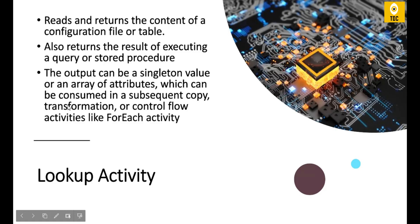The Lookup activity is basically used for reading and returning the content of a configuration file or table. Why do we use a configuration file or table? This is used specifically to do automation. Suppose you want to read 100 files — file 1, file 2, file 3 — which are those 100 files? You store those in the configuration table or configuration file. Or you want to read 10 tables out of 100 source tables — what are those 10 tables? You store them in the configuration file or table, and based on that you can dynamically fetch the values.